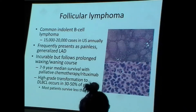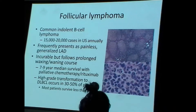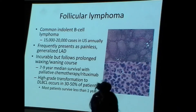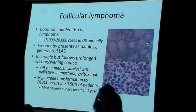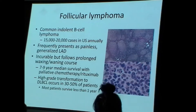Follicular lymphoma gets its name from how the cancer looks under the microscope — there are bubbles or follicles of cancer cells. Follicular lymphoma is one of the more common lymphomas, and it is usually an indolent lymphoma. There really do not exist any good curative approaches. Patients are treated with palliative chemotherapy and the disease follows a waxing and waning course over many years. Eventually, in about half the patients, the disease progresses to a high-grade lymphoma — diffuse large B-cell lymphoma.